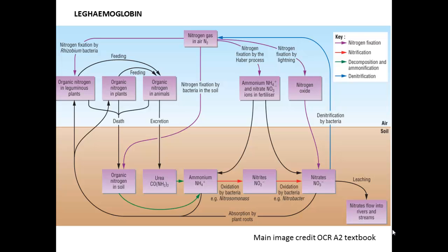This is our big diagram of the nitrogen cycle. We've taken it from the OCR A2 textbook. It's a really good flowchart. It takes in all of the main processes that we need to know about, it's got all the arrows in the right places, and it's got color coding.